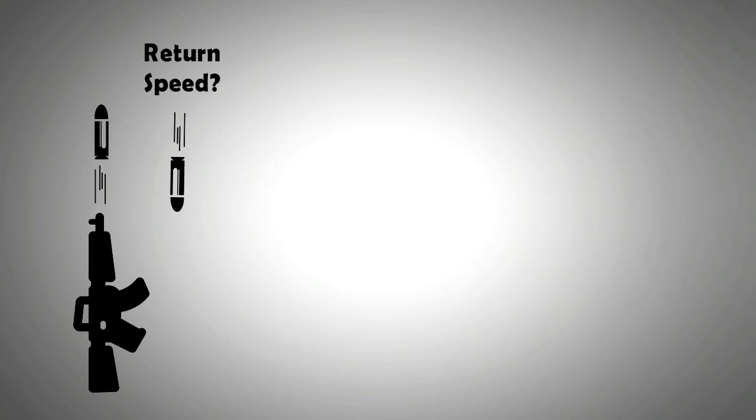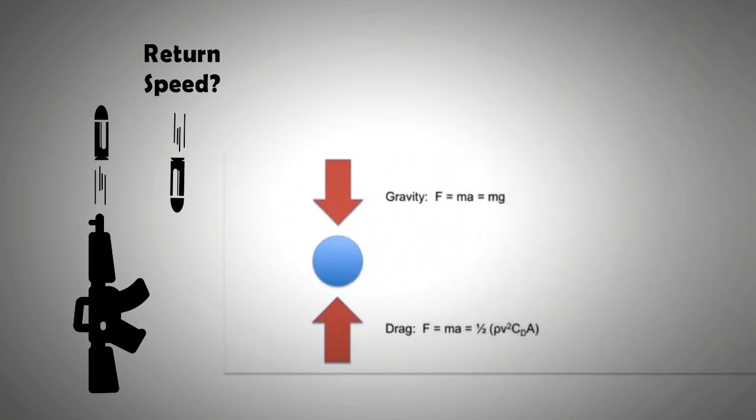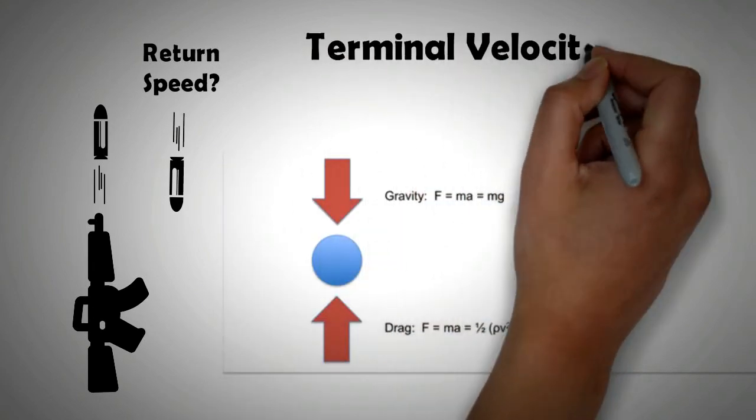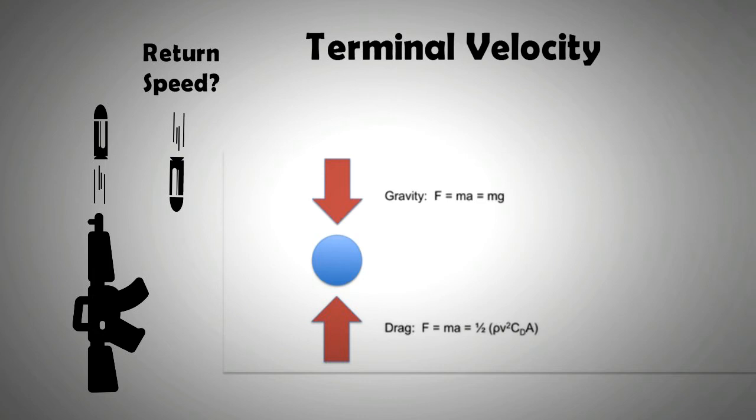The bullet or projectile would face wind resistance as it goes up and as it returns. Air drag greatly reduces the speed. In fact, on its way back, a bullet would accelerate only till it reaches a certain velocity. Once that velocity is attained, its speed will increase no more. This peak velocity which a falling object cannot surpass is called terminal velocity, and it is because of the air drag.